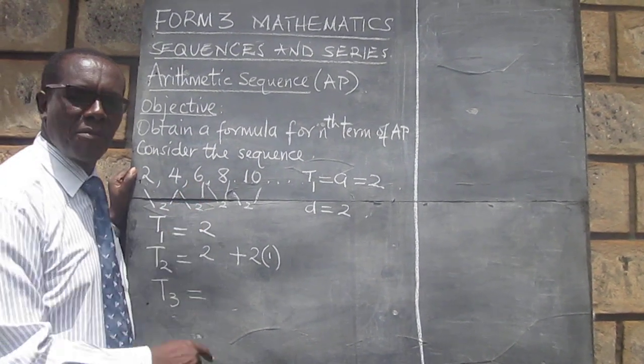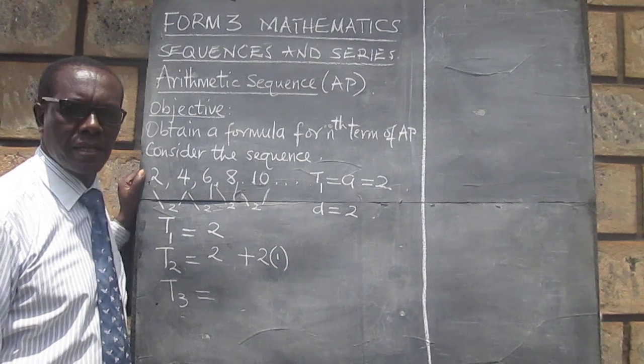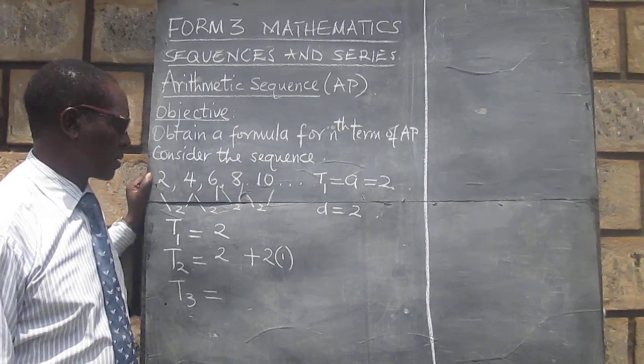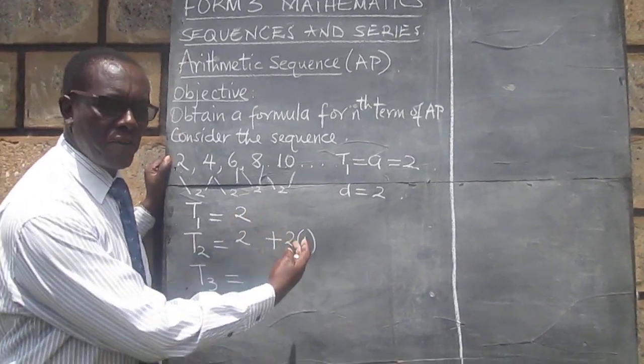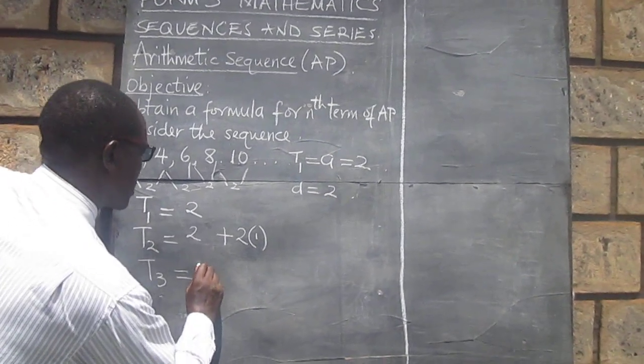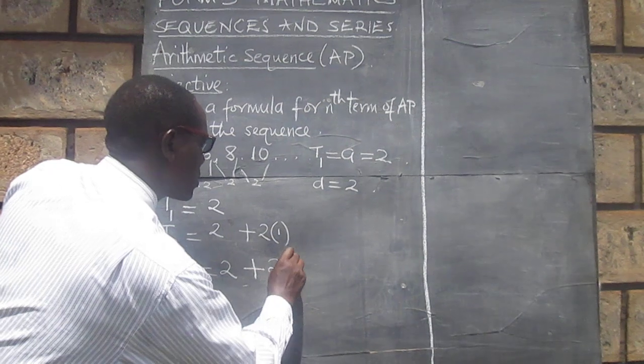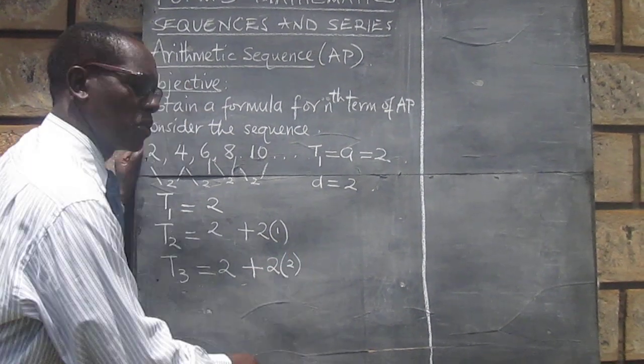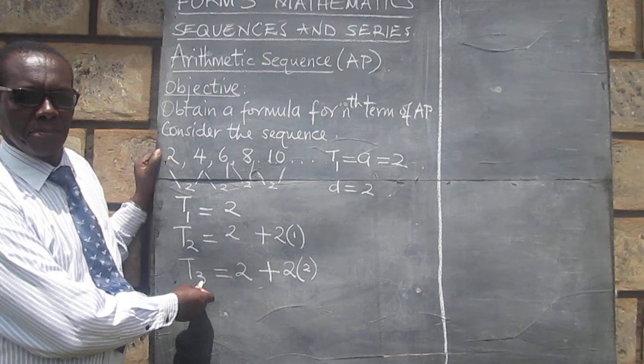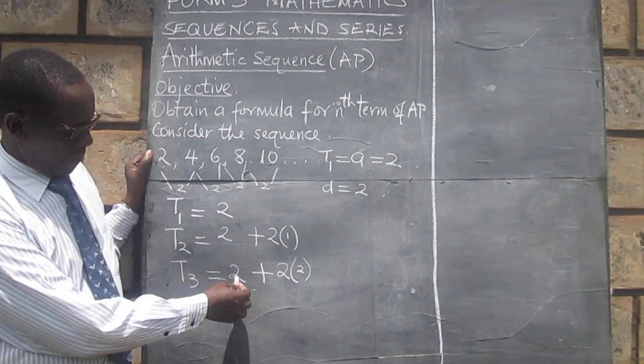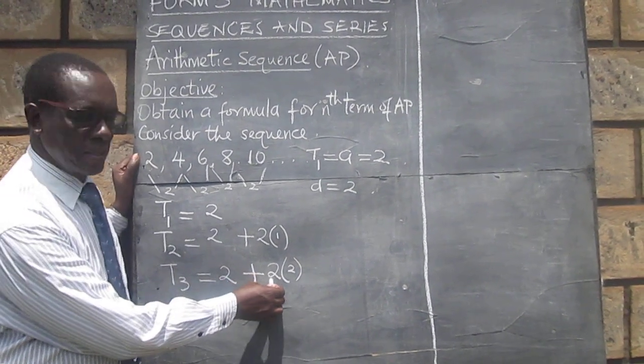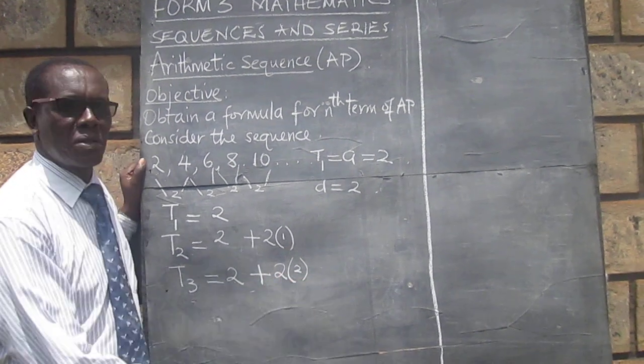Again, you can see the third term, in this case, is 6. And we can also give it the same approach. We can say it is the first term plus 2 times 2. That is the third term equals the first term plus 2 times 2.